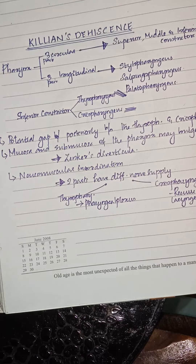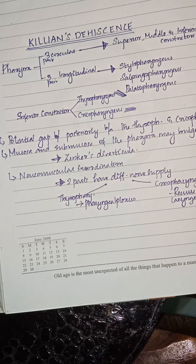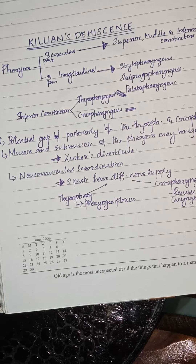For this, we first have to know about the muscular coat of the pharynx. The muscular coat consists of an outer circular layer and an inner longitudinal layer. The circular layer consists of three constrictor muscles: the superior, the middle, and the inferior constrictor. The longitudinal layer is made up of the stylopharyngeus, salpingopharyngeus, and palatopharyngeus muscles.